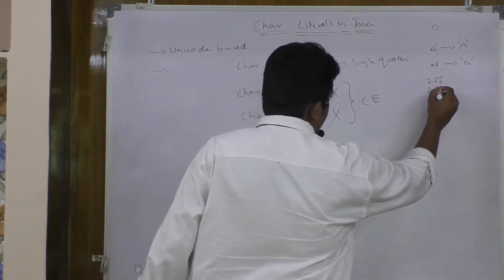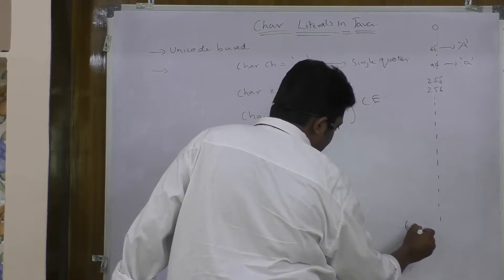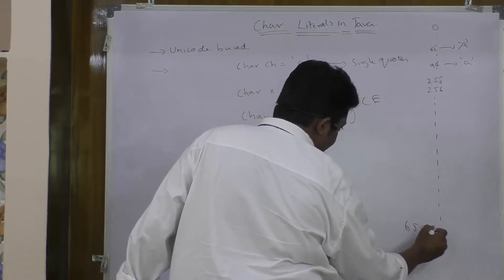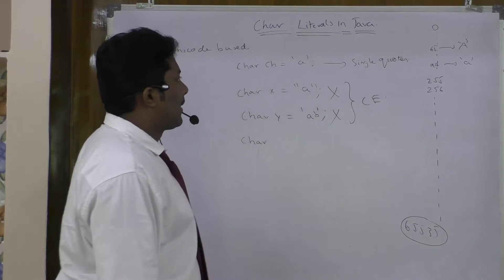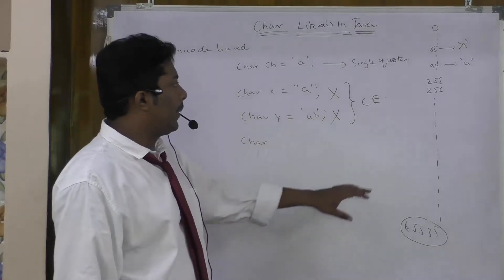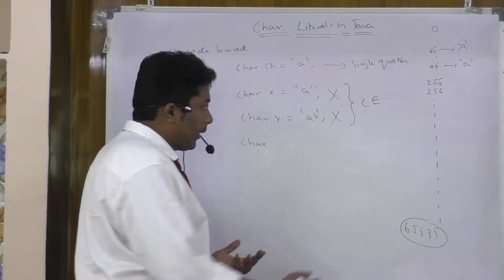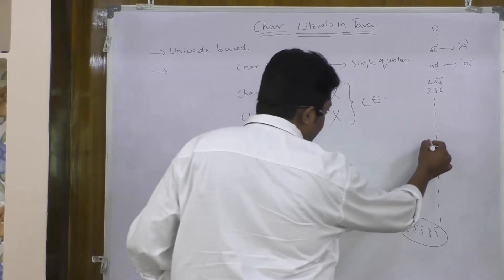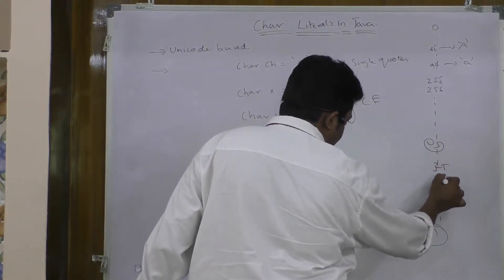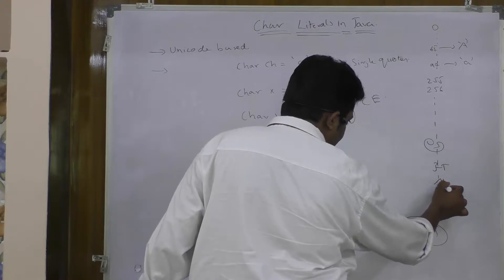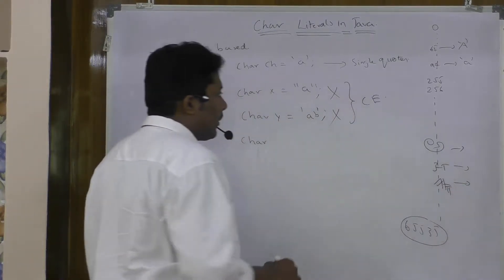Starting from 256 up to 65,535, there are a total of 65,536 characters supported by Java. Java has universal language support — there might be a Telugu letter, a Hindi letter, or a Chinese character. All these things have their corresponding unicode values.